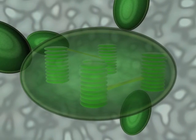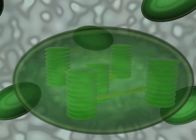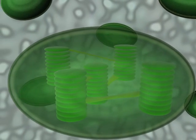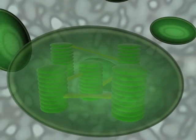In each chloroplast, there are stacks of discs called thylakoids. Each stack is organized into a granule. If we zoom in even further onto the thin membrane of a thylakoid, we can see the step-by-step process.